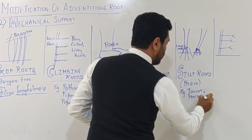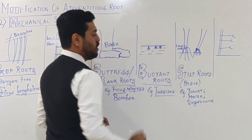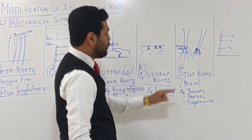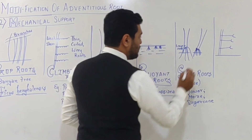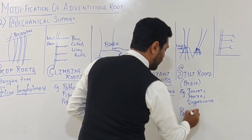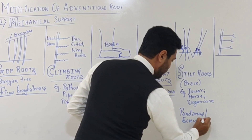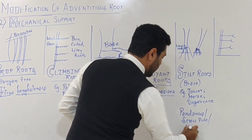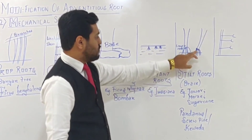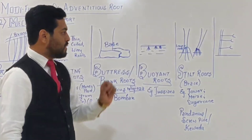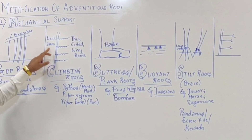Stilt roots arise from the lower nodes in jowar, maize, sugarcane, and wheat. If the question asks which plant shows stilt roots from the base of the stem, the example to remember is Pandanus, also called screw pine or kewda. In Pandanus (screw pine/kewda), stilt roots are produced from the base of the stem.